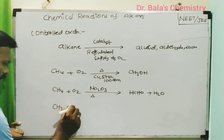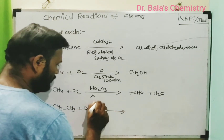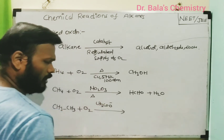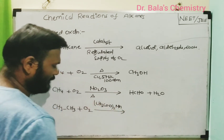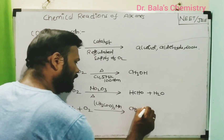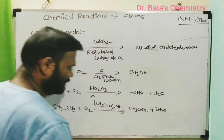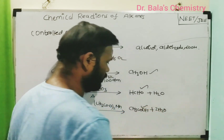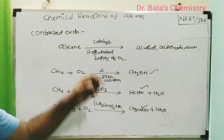The next reaction: take CH3CH3 (ethane) with a controlled supply of oxygen using a manganese-based catalyst. The product formed is CH3COOH (acetic acid) along with 2 moles of water. So through controlled oxidation, you can produce alcohol, aldehydes, and carboxylic acid depending on conditions.